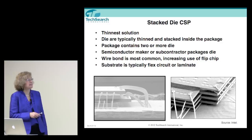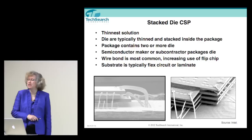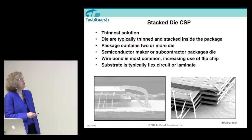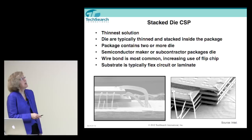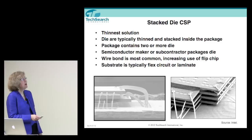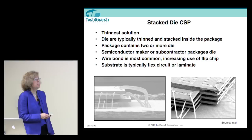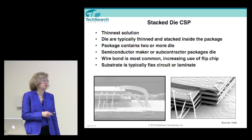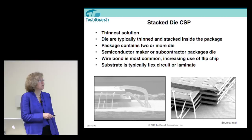Some of the thinnest packages in this category are stacked die CSPs using wire bonds — you can see these nice wire bonds here. The die are very thin and stacked inside the package, typically two or more die per package, assembled by either the semiconductor maker or a subcontractor like Amkor, ASE, SPIL, or STATS ChipPAC. Wire bond is most common, but we see increasing use of flip chip, especially on the bottom die. The substrate is typically laminate, with a little flex circuit still used. A special bonding process is required — a down bond going down and back — that people had to specifically develop to enable this stacking.